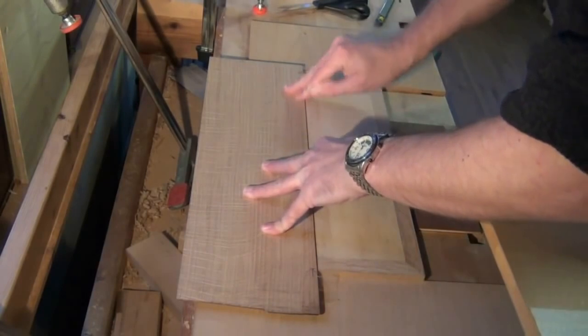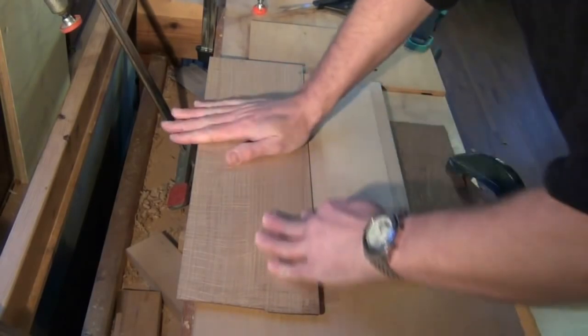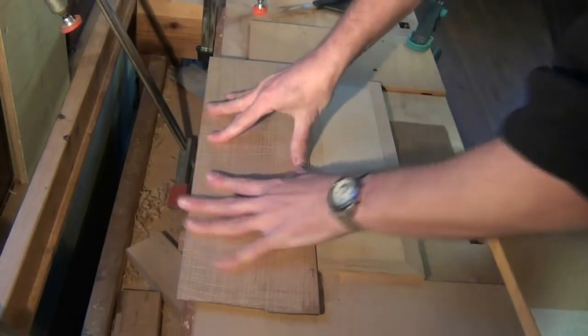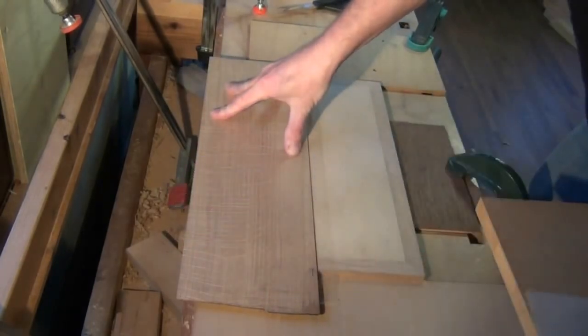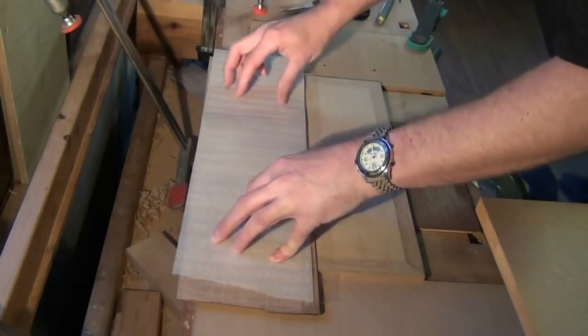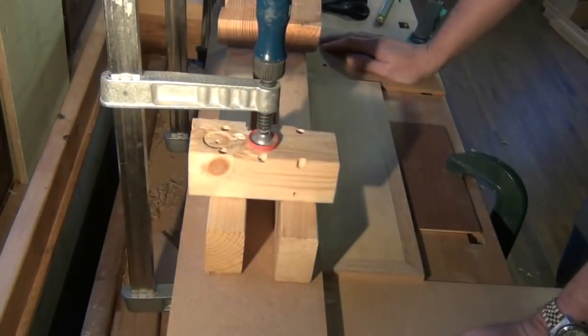OK, that's good. It will want to curl as soon as it gets some dampness from the glue. Let's be as quick as we can. Get some pressure down on it. Leave that for 12 hours and then we can take the clamps off.